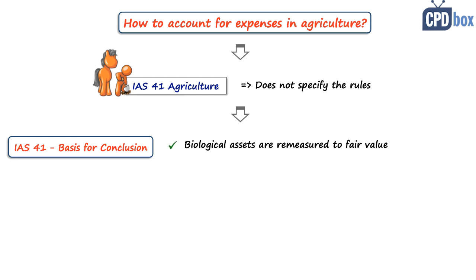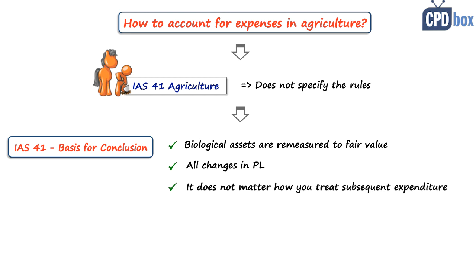The reason is that biological assets need to be remeasured to their fair value less cost to sell, with all changes in profit or loss. Therefore, it doesn't matter how you treat the subsequent expenditure because it will always end up in profit or loss anyway. The effect on profit or loss will always be the same.